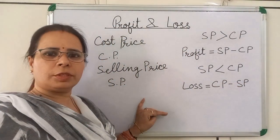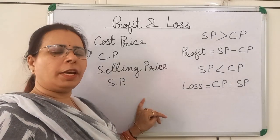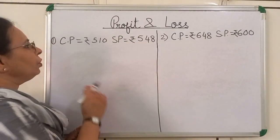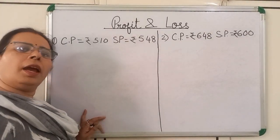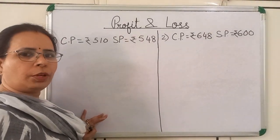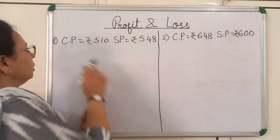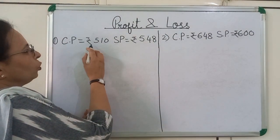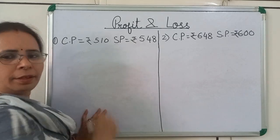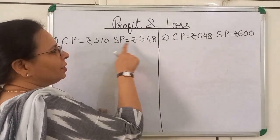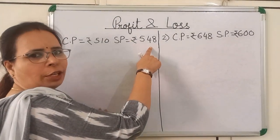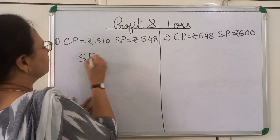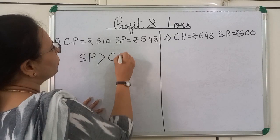Now we will solve some questions related to profit and loss. In the first question, you can see cost price is Rs. 510 and selling price is Rs. 548.